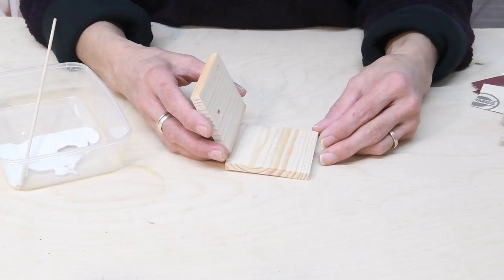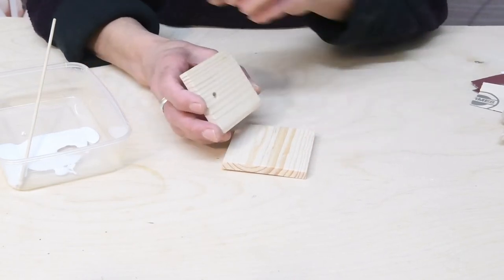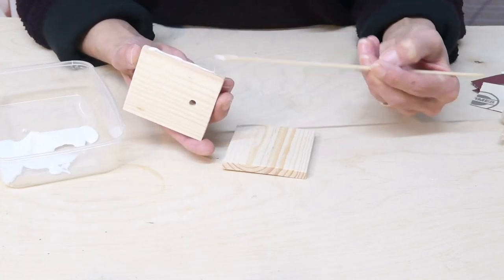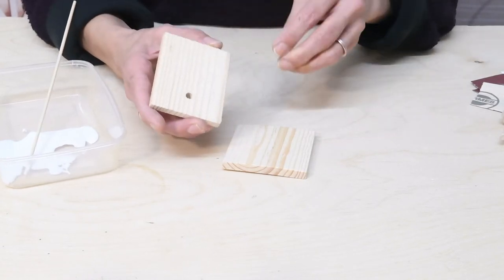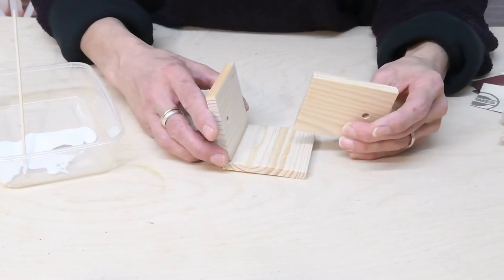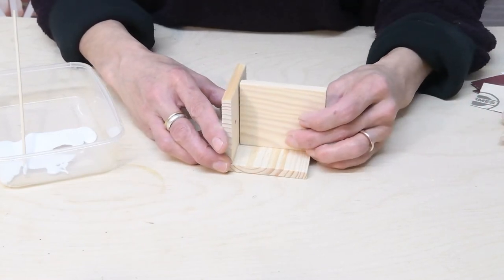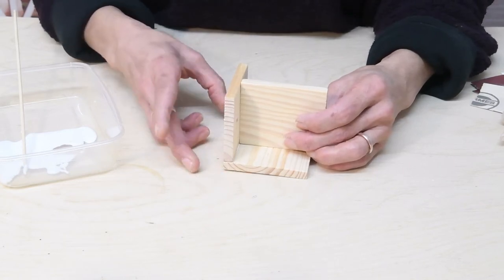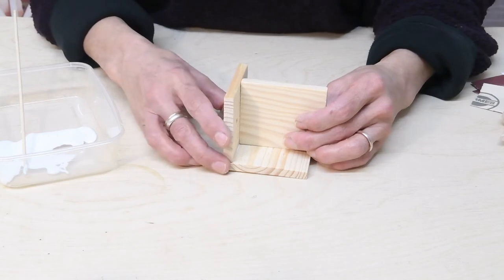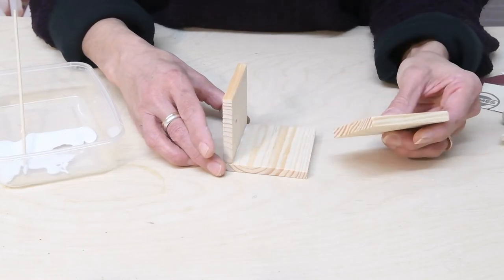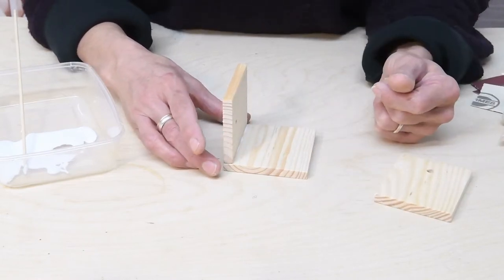So page five stage three gluing the side onto the base, just putting a line of glue along the edge there. A handy trick is to use the second side to help you square up the first just to make sure that that is good and straight and at a right angle. If you get the first side on straight it's easier to get everything else on straight afterwards and then put that aside to dry.